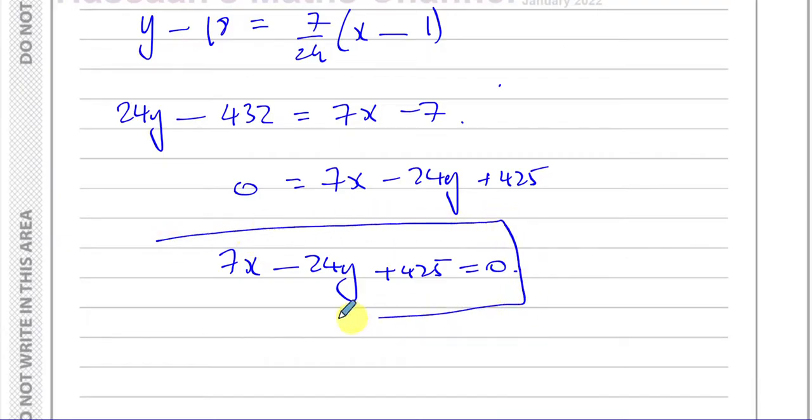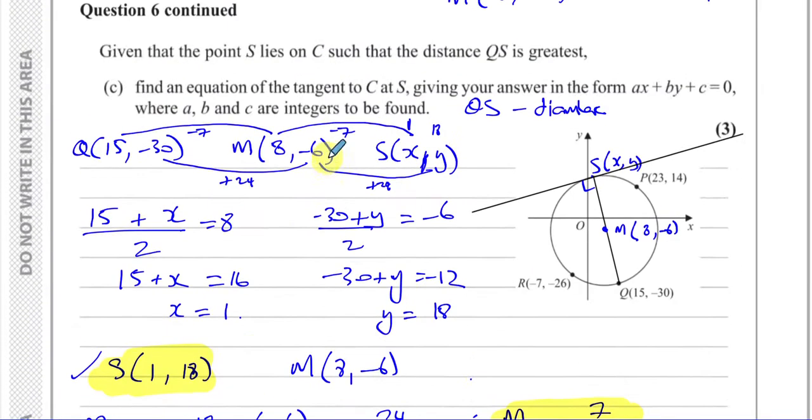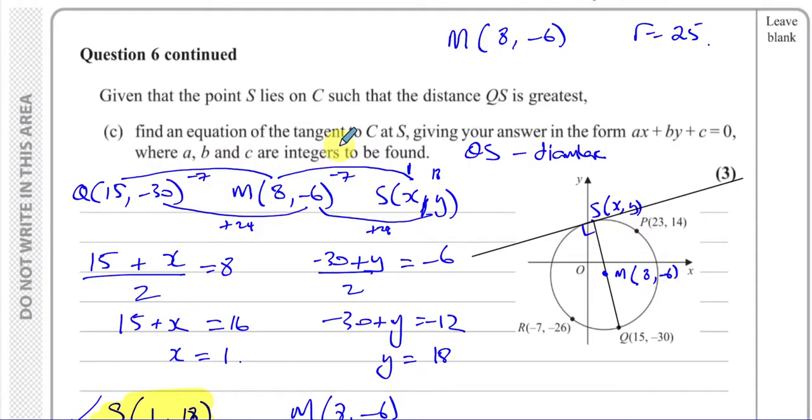That's the form required. You could have also written it as 24Y minus 7X minus 425 equals 0. It's perfectly fine. I just like to keep the X term positive. That's the way I like to do it but that's perfectly fine either way. And there we have the answer to part C and the end of this question number six.